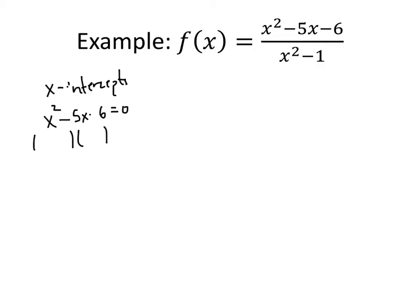We can factor that. That gives us (x - 6)(x + 1). That gives us two solutions, x equals 6 and x equals negative 1. And so our conclusion would be that this function has two x-intercepts, one at 6 and one at negative 1.